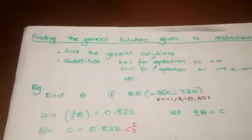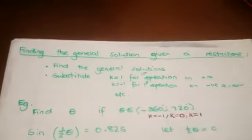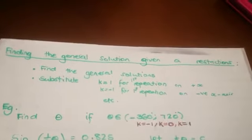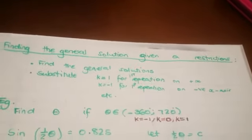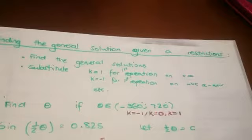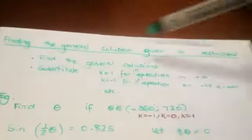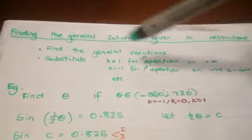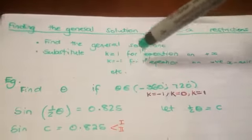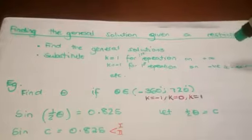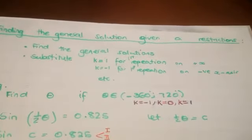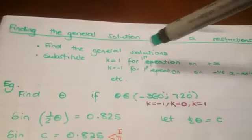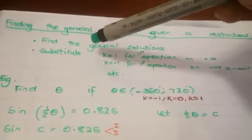Good day, Grade 11. Today we are going to look at finding a general solution when a restriction is given. What we are going to do is find the general solution like we did before, and then substitute values of K to find the solution within that repetition.